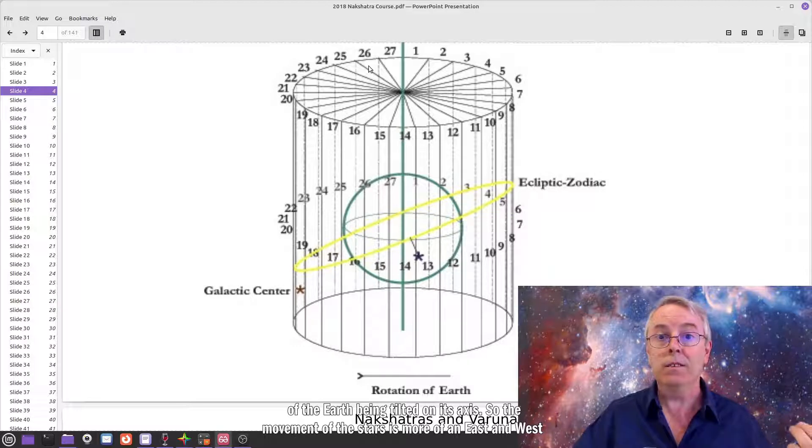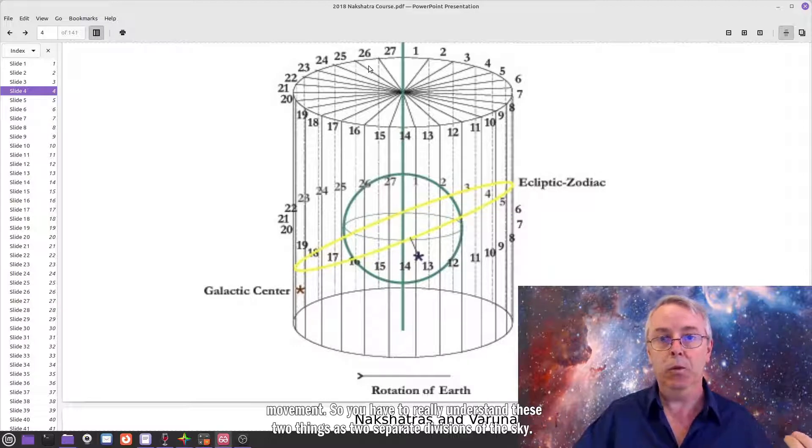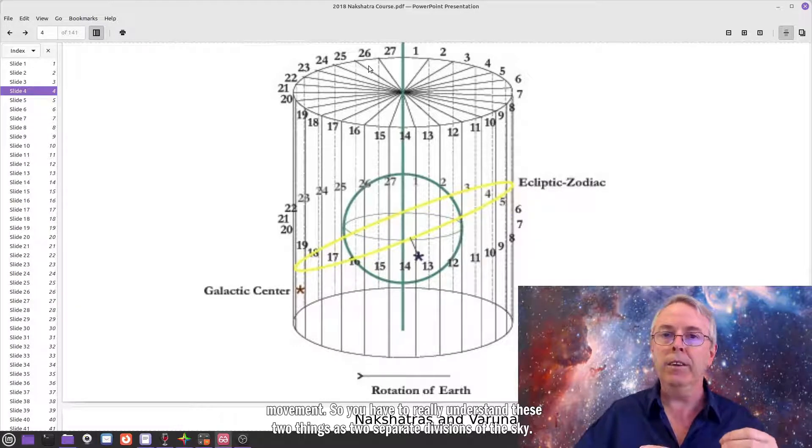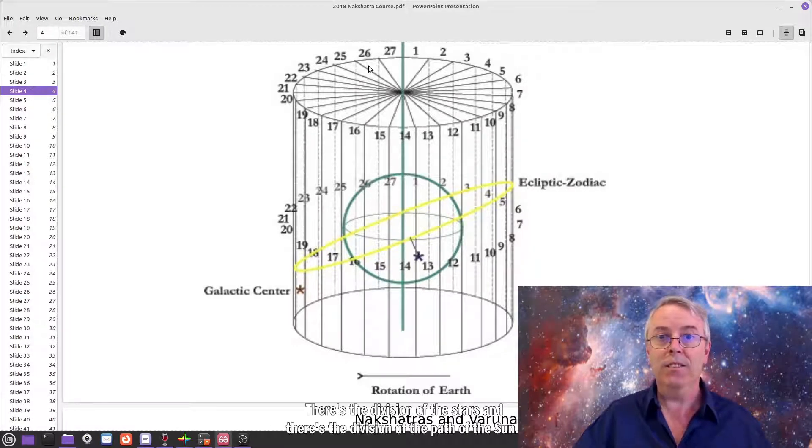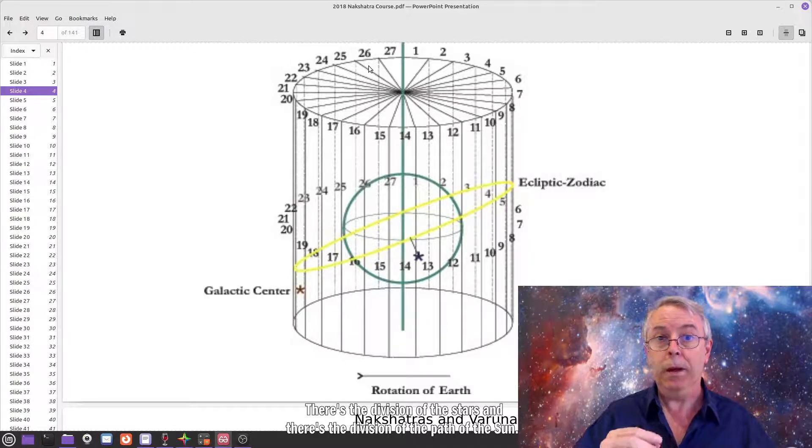So the movement of the stars is more of an east and west movement. So you have to really understand these two things as two separate divisions of the sky. There's the division of the stars, and there's the division of the path of the sun.